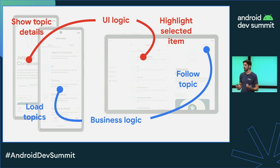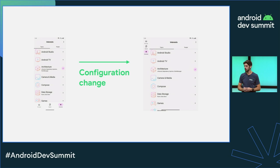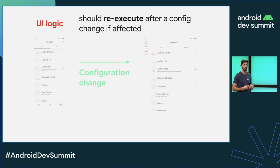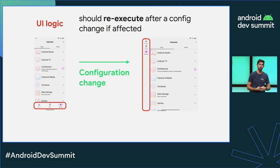We're in Android, and we know that configuration changes can happen. For example, in a foldable device, screen sizes are going to change whenever the user unfolds or folds the device, and this affects how the different types of logic should be executed. The UI logic should be re-executed after a configuration change if it is affected. In a folded state, we might want to show the bottom bar navigation, and in the unfolded state, we might want to show the nav rail. The logic to decide whether to show the bottom bar or nav rail should be re-evaluated after a screen size configuration change.